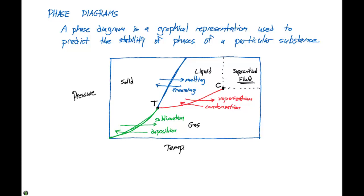This curve usually slopes a little bit up to the right. That's because as the pressure increases for most substances, the solid form is denser than the liquid form. So we typically see this curve up to the right for most substances.